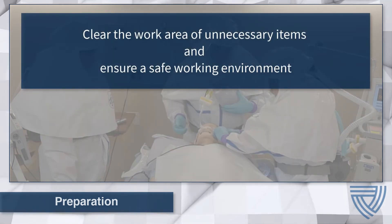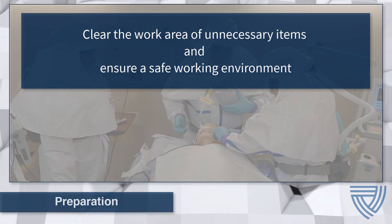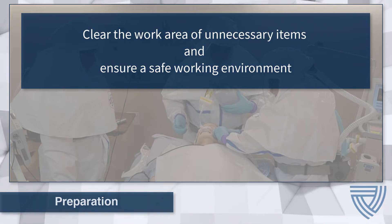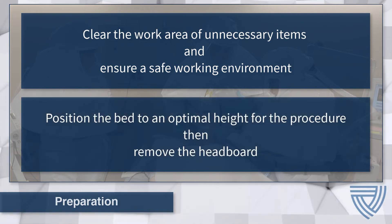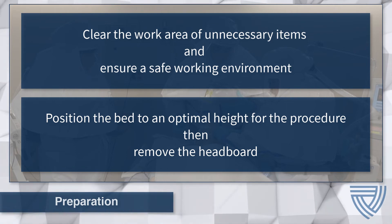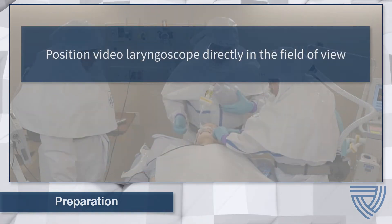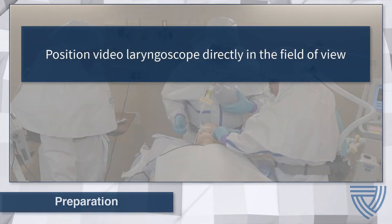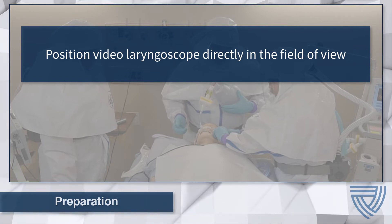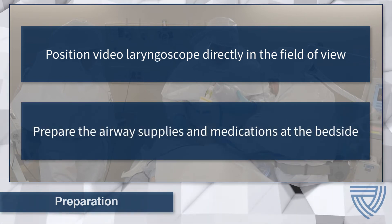To prepare the patient care room for the intubation procedure: clear the work area of all unnecessary items and ensure a safe working environment. Position the bed at a safe and comfortable height for the provider performing the intubation procedure. Remove the headboard. Prepare the video laryngoscope for use and position it directly in the provider's field of view.